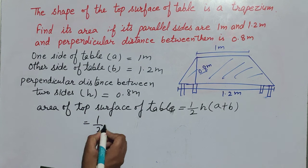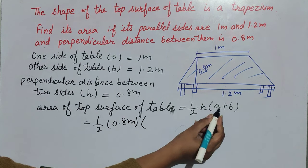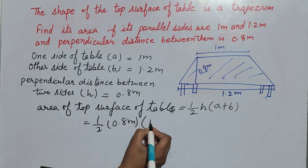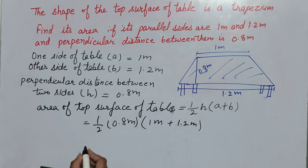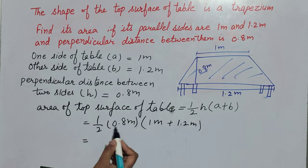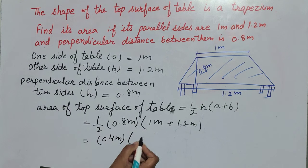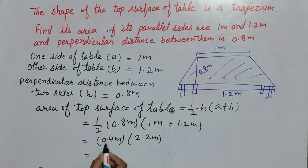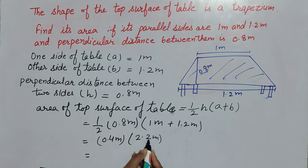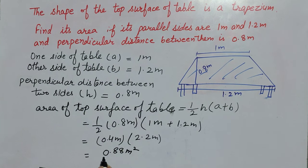It is equal to 1/2 into h, where h is equal to 0.8 meter, into (a + b), where a is equal to 1 meter and b is equal to 1.2 meter. So it is equal to 0.8 divided by 2, which gives 0.4 meters, into (1 + 1.2), which is equal to 2.2 meters. Therefore 0.4 meter multiplied by 2.2 meter gives the answer 0.88 meters square.